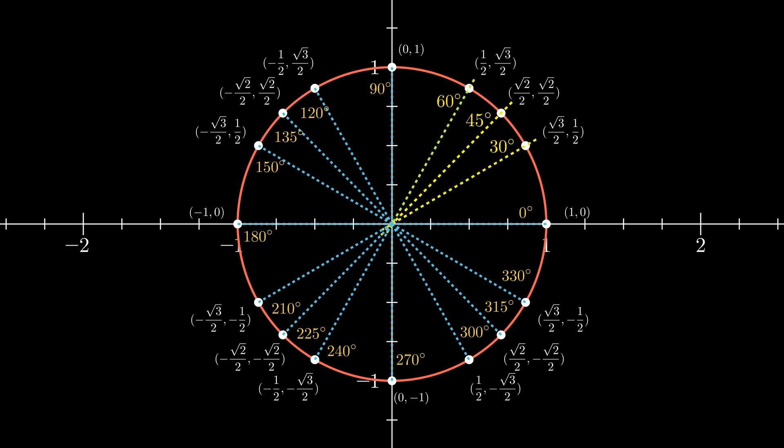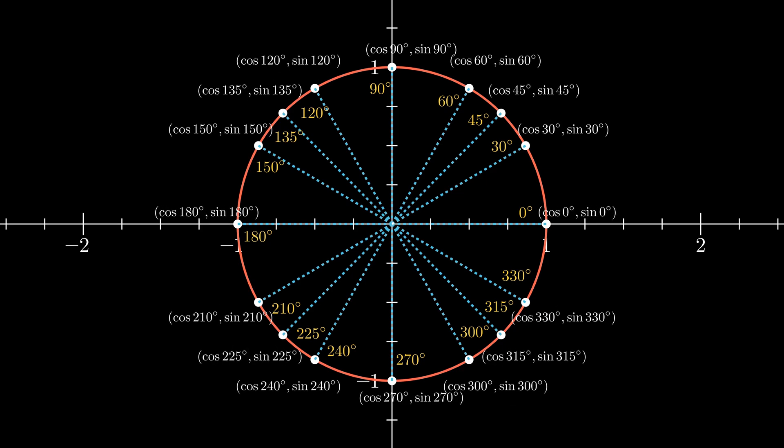For cardinal directions as well as 30, 45, and 60 degrees past each, the larger idea is that each point on the circle has coordinates (cos θ, sin θ), where θ is the angle that each point makes with the center of the circle—more specifically, the angle formed between the radius drawn from the point on the circle to the origin and the x-axis.